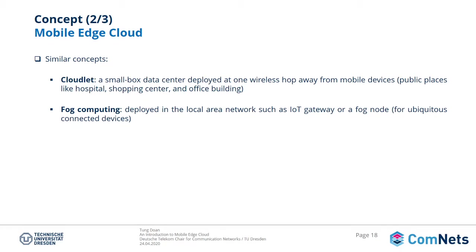Now I will show similar concepts. There are several concepts like mobile edge cloud. For example, Cloudlet: a Cloudlet is a small data center deployed at a wireless hub close to mobile devices. It can be located in a hospital, shopping center, or office building. Another concept is fog computing, which is deployed in the local area network such as an IoT gateway or fog node. The fog node can be a router or switch. Fog computing is targeted at ubiquitously connected devices such as IoT devices.